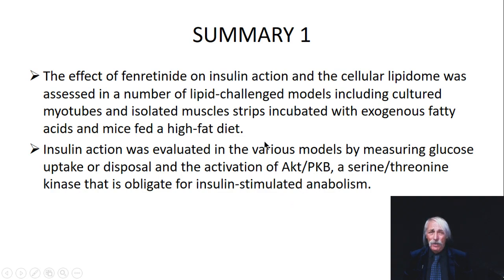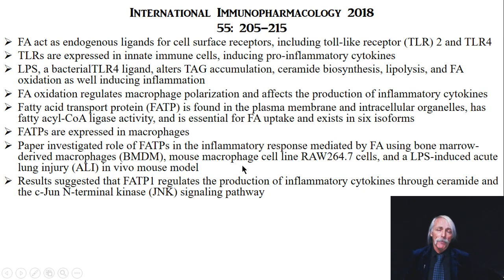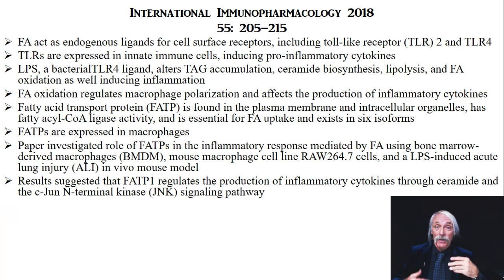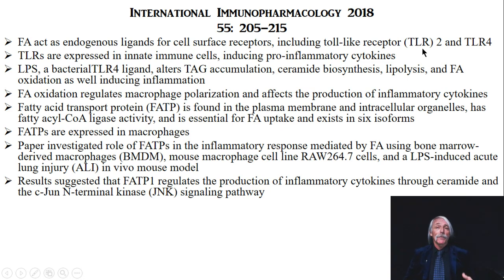The last paper, from the International Immunopharmacology Journal — to be published in February 2018 — covers fatty acids acting as endogenous ligands for cell surface receptors, including toll-like receptors. TLRs are expressed in innate immune cells and induce pro-inflammatory cytokines. LPS, the lipopolysaccharide from gram-negative bacteria, is the paradigmatic pathogenic ligand for the toll-like receptor TLR4. LPS turns on that receptor and produces inflammation, but also alters TAG accumulation, ceramide biosynthesis, lipolysis of TAG, and fatty acid oxidation.